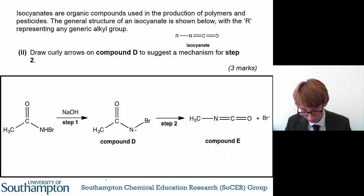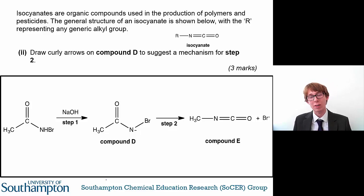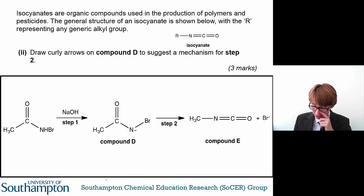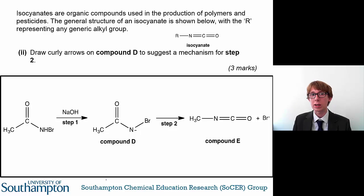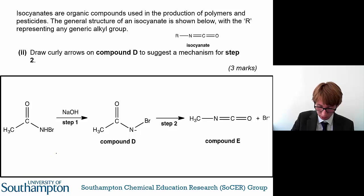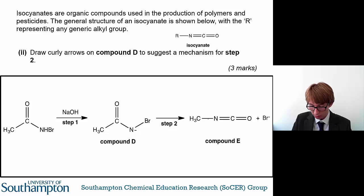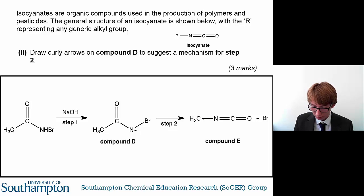The second question is where things get tricky. Draw curly arrows on compound D to suggest a mechanism for step two — this is worth three marks. If you're only drawing curly arrows and it's worth three marks, you can be pretty certain you're going to have to draw three curly arrows. What I would recommend is that you look at the product, see where you're going, and see if you can map what you're doing onto that.